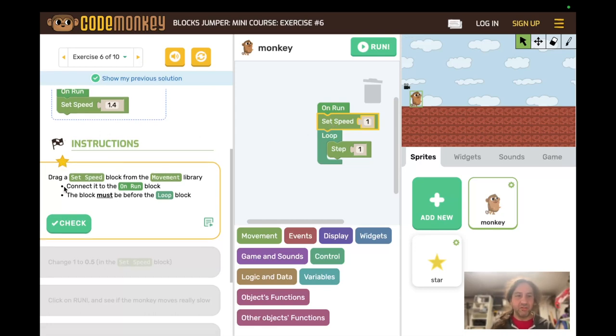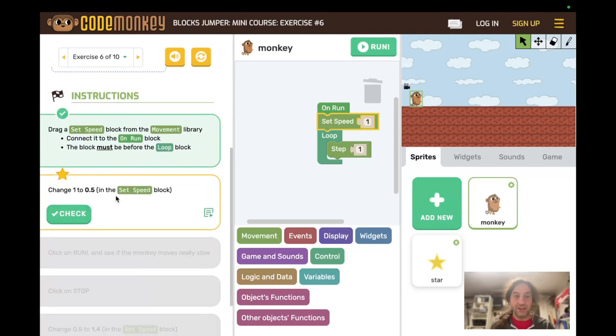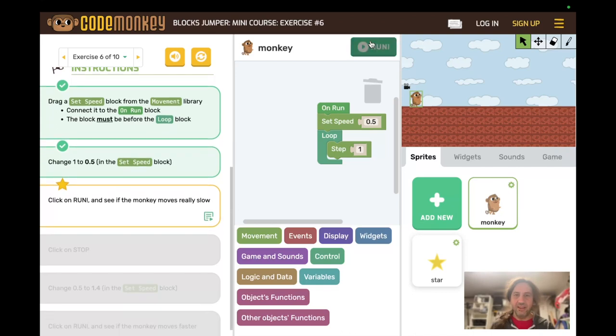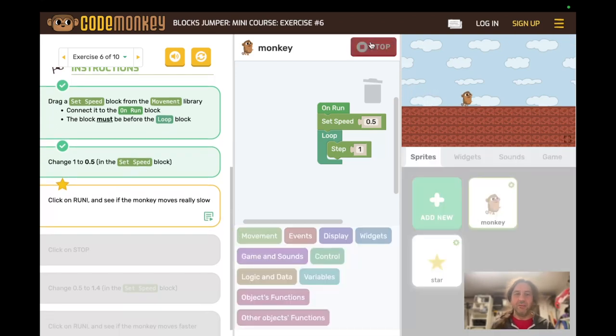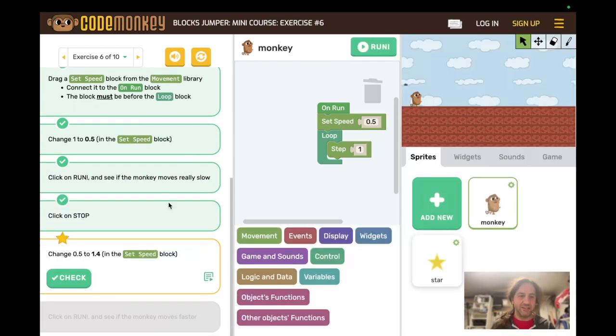And here we haven't set it to 1.4 yet. We've just, we're just following the instructions explicitly. Now, actually, we change it to 0.5. So the 1.4 was a herring, red herring. And check. And then the monkey moves really slow. And you have to wait for it to actually tell you that you can hit stop.